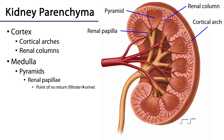The medulla is organized into discrete collections of tissue called pyramids. These are probably poorly named because when you look at them three-dimensionally they're actually conical in nature. They're named pyramids because when you section through the kidney, or if you section through a cone, the profile looks pyramidal in nature.